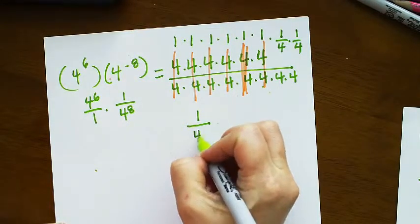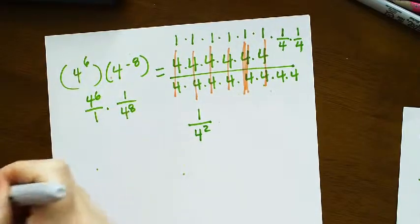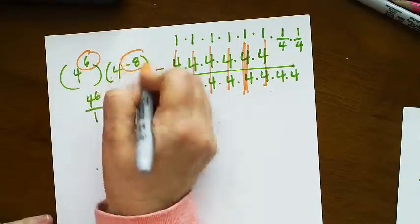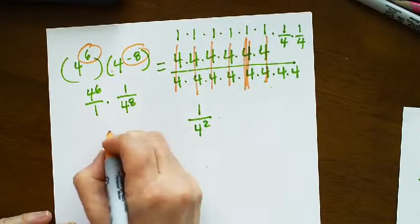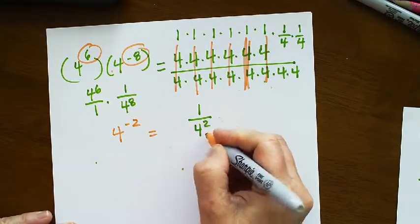Now the shortcut would be to just add the exponents, 6 plus negative 8 is negative 2. So that would be 4 to the negative 2, which would be 1 over 4 squared.